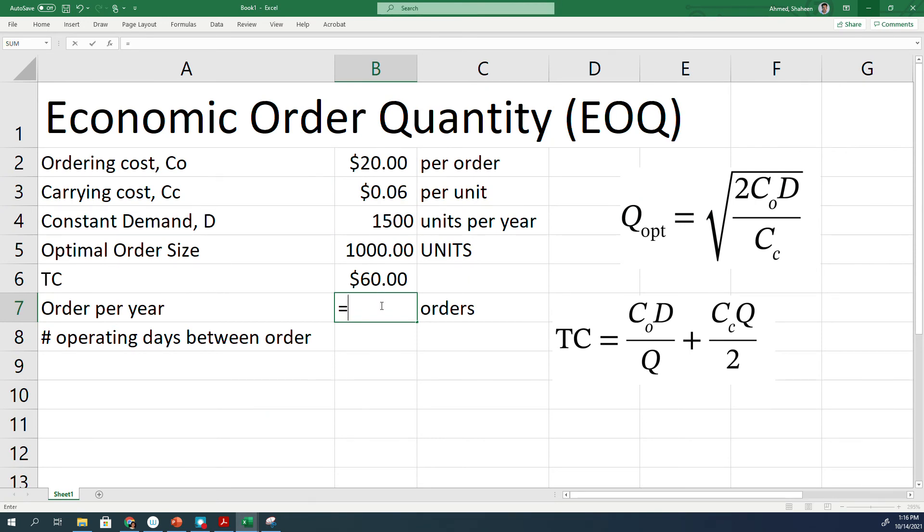So then the number of orders per year, I need fifteen hundred per year, and I'm placing thousand item orders, so it's going to be one and a half orders per year. And if it operates 365 days, which is not normally the case, but let's say this company works 365 days. So then basically, the number of days between orders, you are placing only one and a half orders per year, so it's going to be two hundred forty-three days before you place the next order.